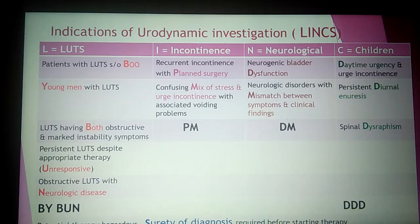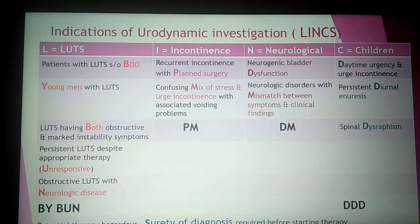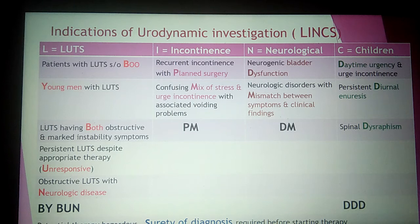Under the L group, focus on these key words: bladder outlet obstruction in young men, both obstructive and instability symptoms present together, U for unresponsive patients even after appropriate therapy, and N for neurologic disease with LUTS. These give us five indications under the L group.